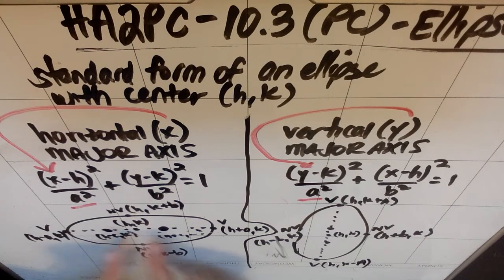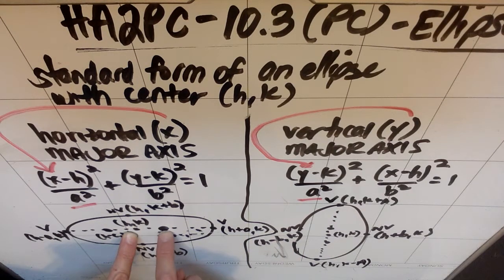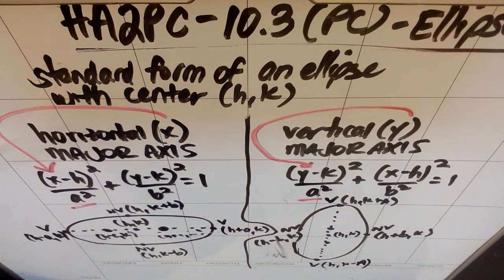Similarly the foci are c units away from the center. So just like the vertex was h plus a comma k, this would be h plus c comma k, which kind of got erased by my finger, but h plus c comma k, and this one would be h minus c comma k.